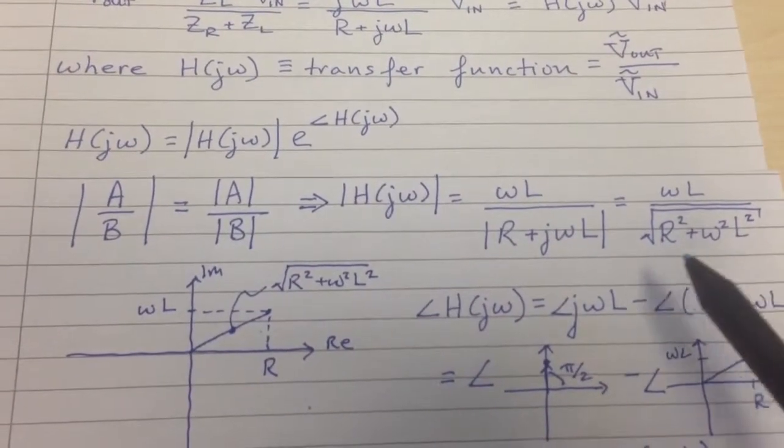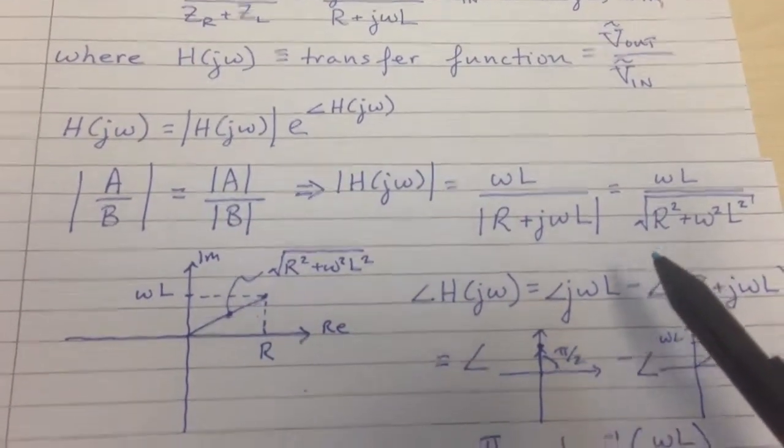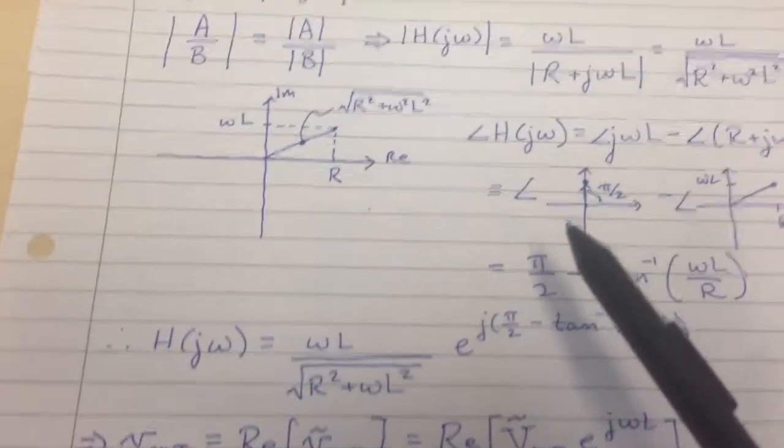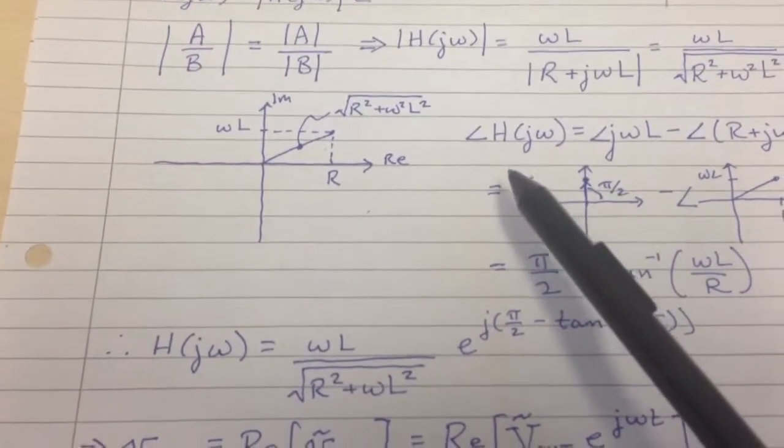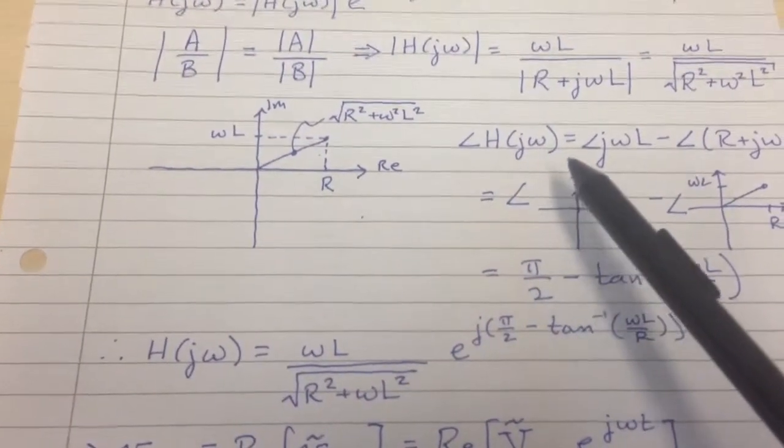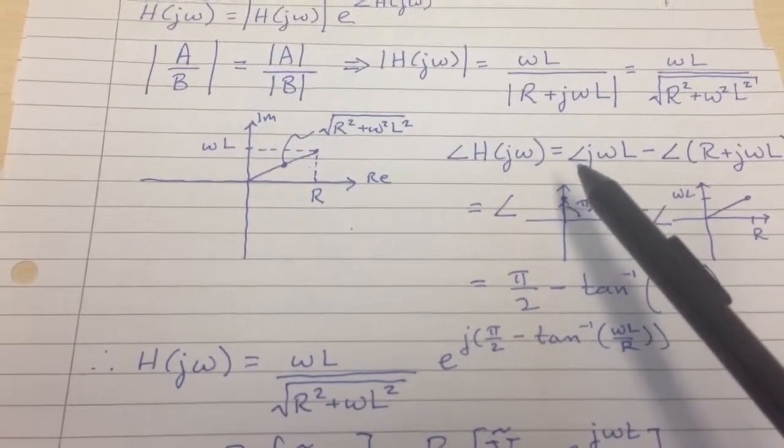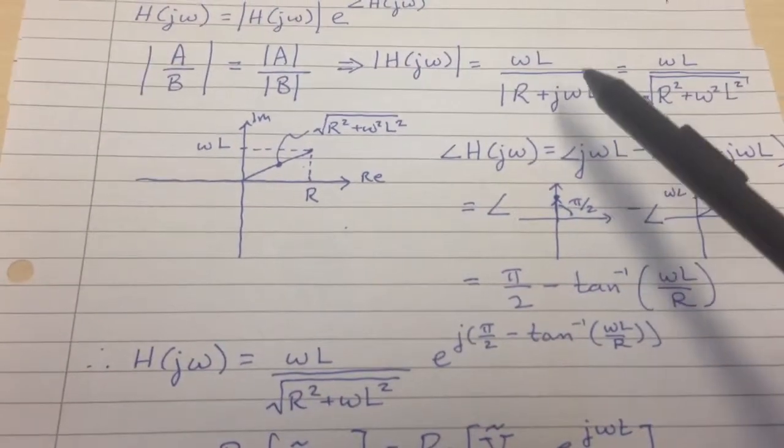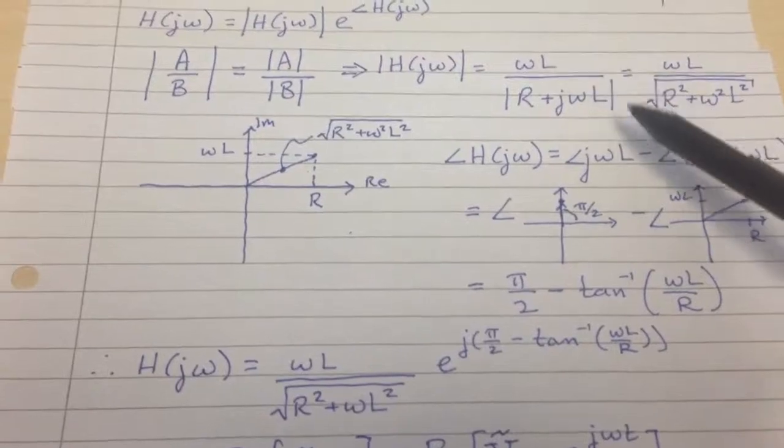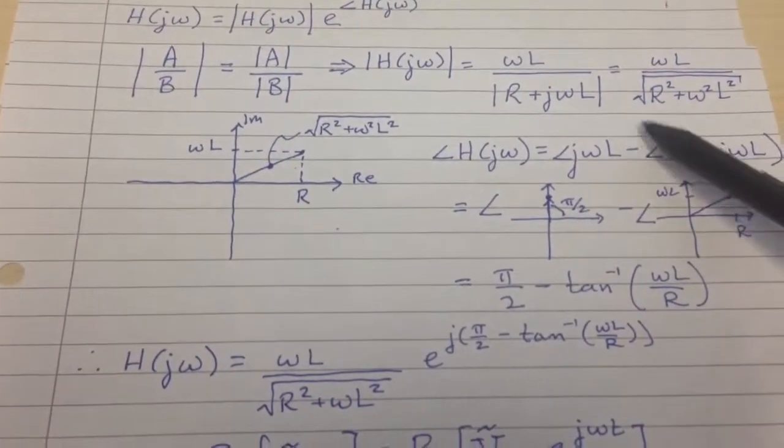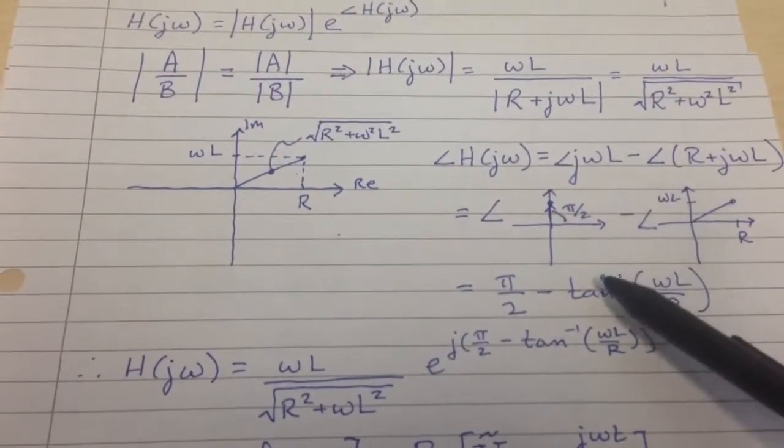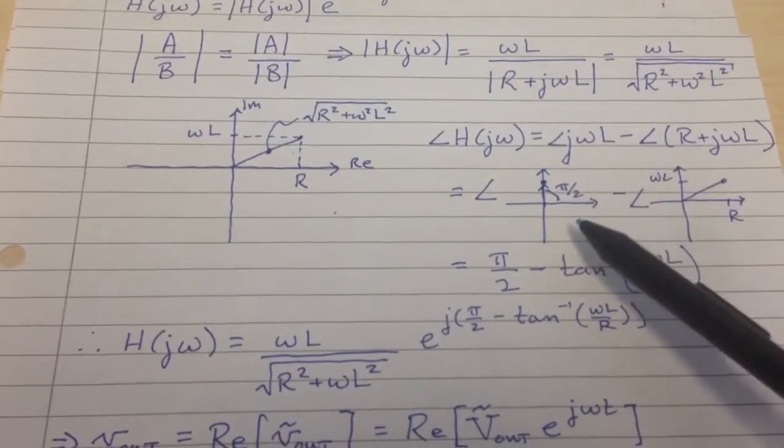So that gives you this expression for the total magnitude. The argument can be found similarly by taking H(jω) equal to the argument of the numerator minus the argument of the denominator, if you remember your polar complex numbers.